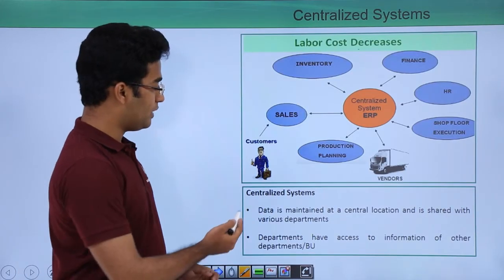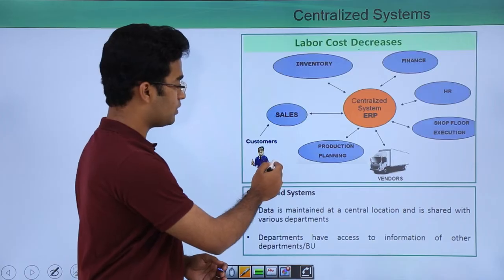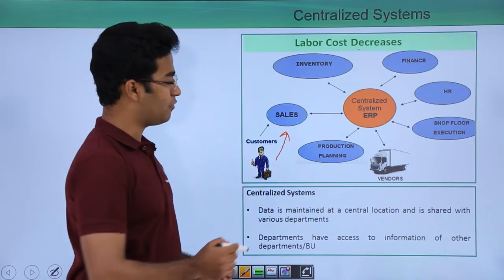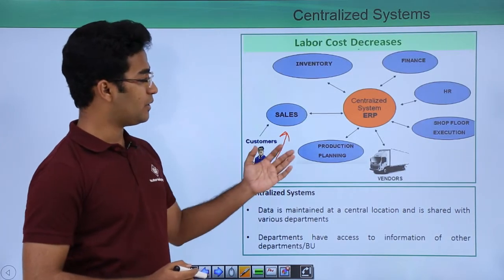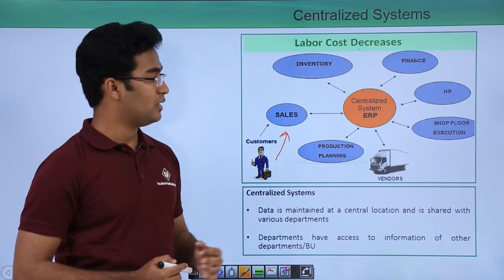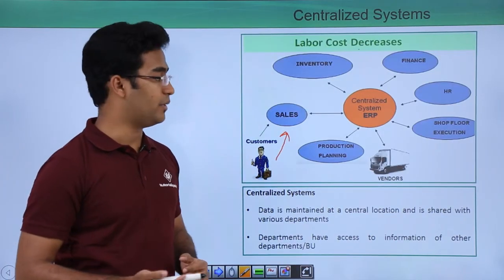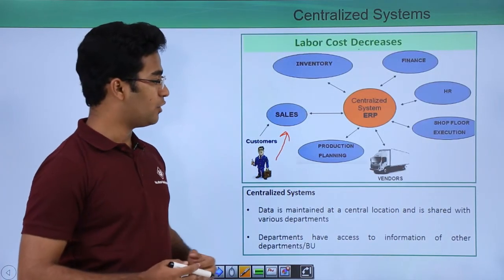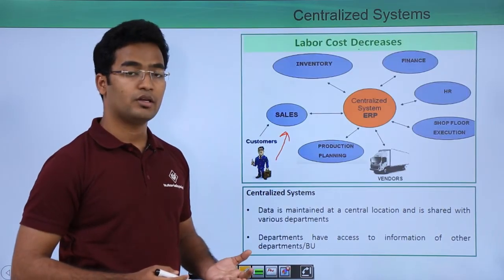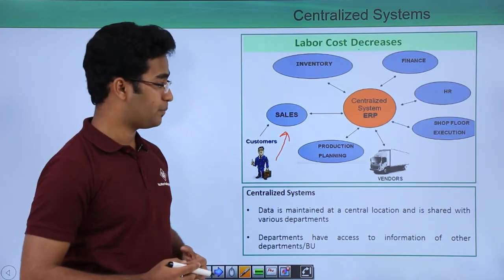Now let us see an example. When a customer comes to buy a product from the sales department, the sales department has real-time information — that is, the inventory has already been updated. This increased revenue and the customer was happy.